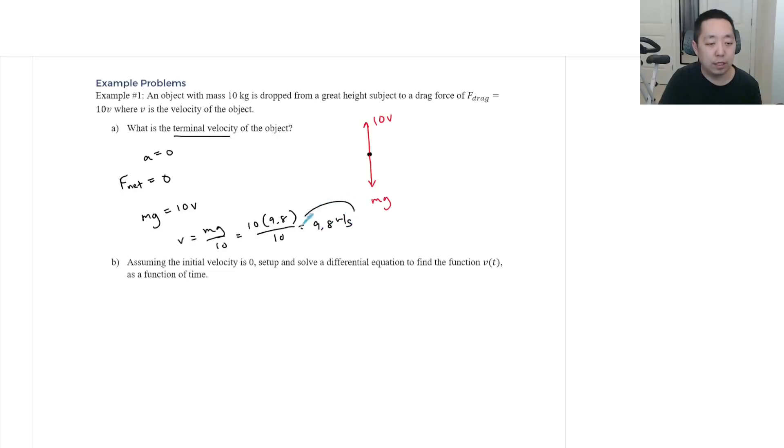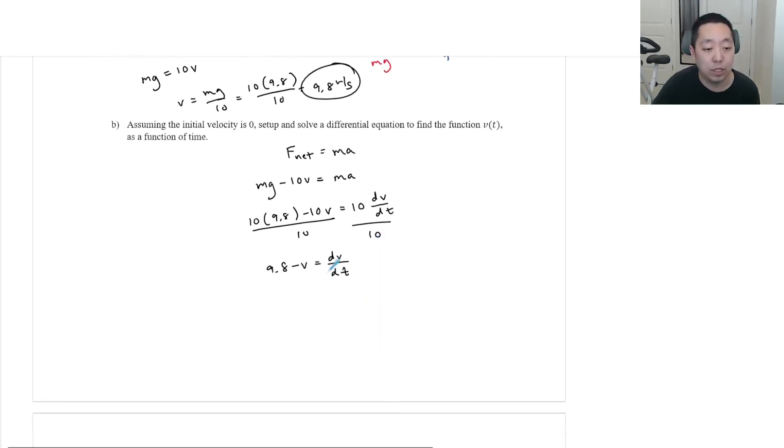Now assuming the initial velocity is zero, set up and solve a differential equation to find the function v of t as a function of time. So if I'm just looking at this, I know that let's say it's accelerating downward, down is the positive direction, we're going to apply net force equals ma. So if the positive direction is downward, we say mg minus 10v is equal to ma. And so let's just do this is 10 times 9.8 minus 10v is equal to 10. And the acceleration is dv/dt. That's the differential equation here.